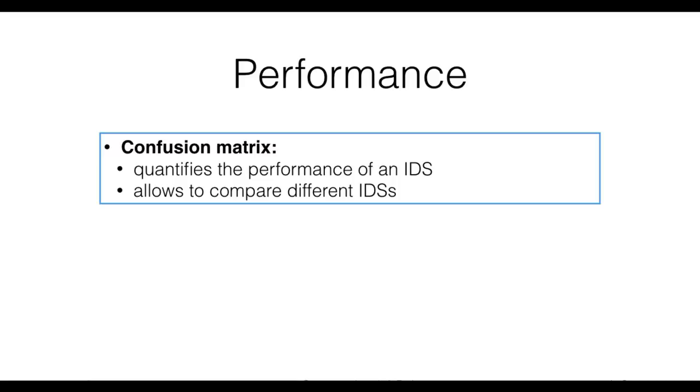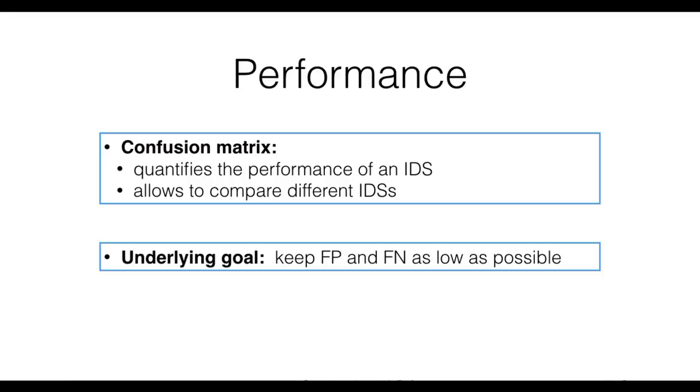Now that we know how we can measure the classification performance of an IDS, let's think about how we can use this to improve the security of a network. Clearly, the underlying goal is to keep both false positives and false negatives as low as possible. If you take the point of view of a network administrator, false positives are costly, since alerts need to be manually checked. On the other hand, false negatives constitute a security risk, which you may or may not be willing to take depending on which attack will go undetected. This brings us to the last topic of this lecture, namely the tuning of an IDS.